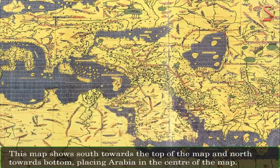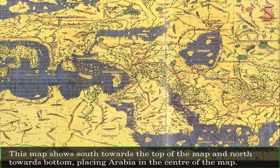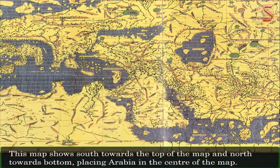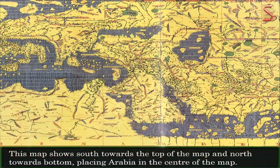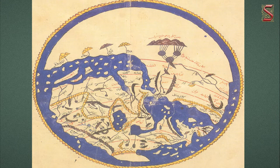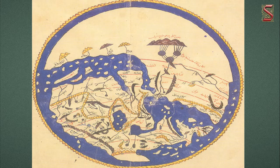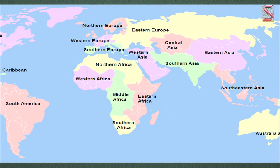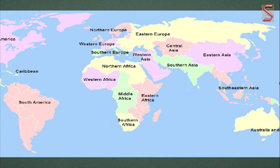In 1154, the famous Arab map maker Al-Idrisi prepared a world map for his king. This map shows south towards the top and north towards the bottom, placing Arabia in the center of the map. With legends written in Arabic, this map shows the complete Eurasian continent and only the northern part of the African continent, but does not have any details of Southern Africa and Southeast Asia.